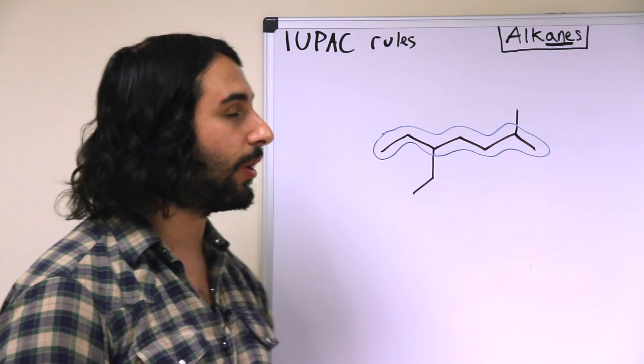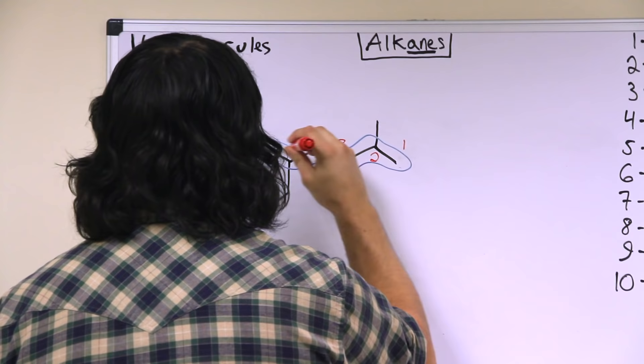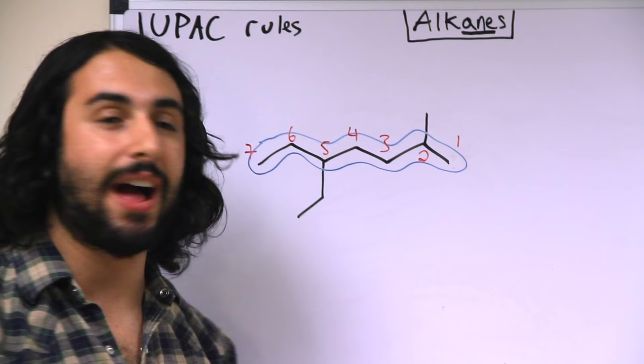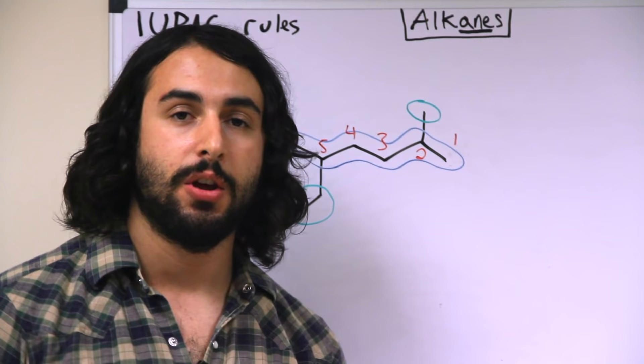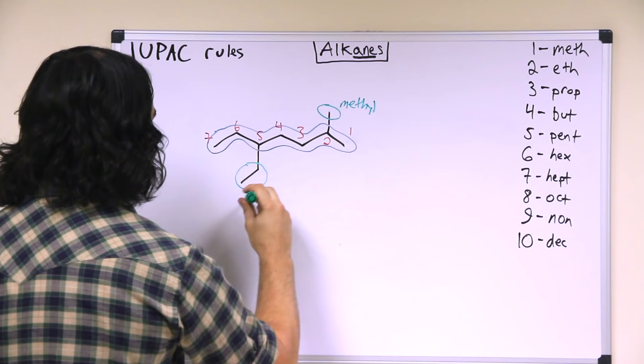In this case we're going to have to number right to left because a substituent occurs on the second carbon from the right, whereas from the left it would occur on the third. So we're going to number this right to left and we are going to see that there are therefore two alkyl substituents: a two carbon substituent here and a one carbon substituent here.